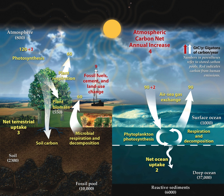The geologic component of the carbon cycle operates slowly in comparison to the other parts of the global carbon cycle. It is one of the most important determinants of the amount of carbon in the atmosphere, and thus of global temperatures. Most of the Earth's carbon is stored inertly in the Earth's lithosphere. Much of the carbon stored in the Earth's mantle was stored there when the Earth formed. Some was deposited in the form of organic carbon from the biosphere. About 80% of other carbon stored in the geosphere is limestone and its derivatives, which form from the sedimentation of calcium carbonate stored in the shells of marine organisms.